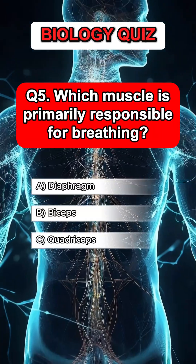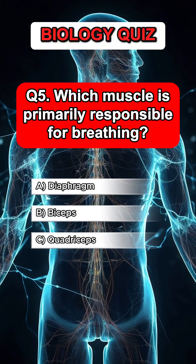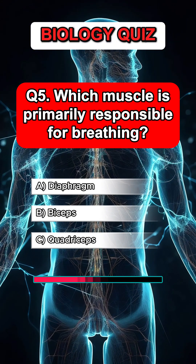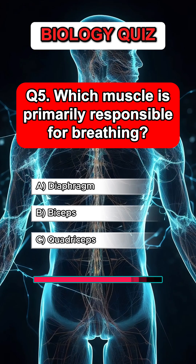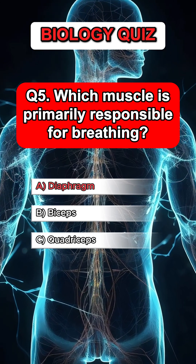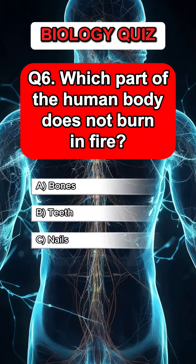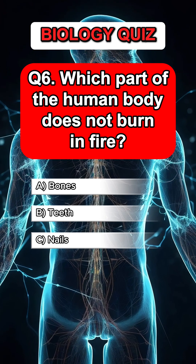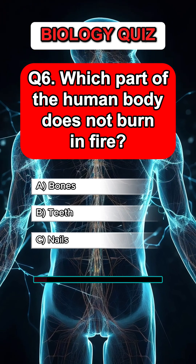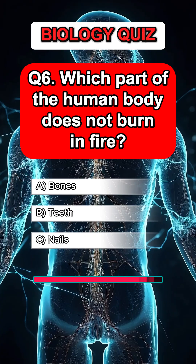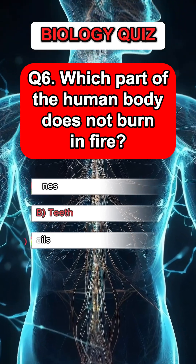Question 5. Which muscle is primarily responsible for breathing? Answer A. Diaphragm. Question 6. Which part of the human body does not burn in fire? Answer B. Teeth.